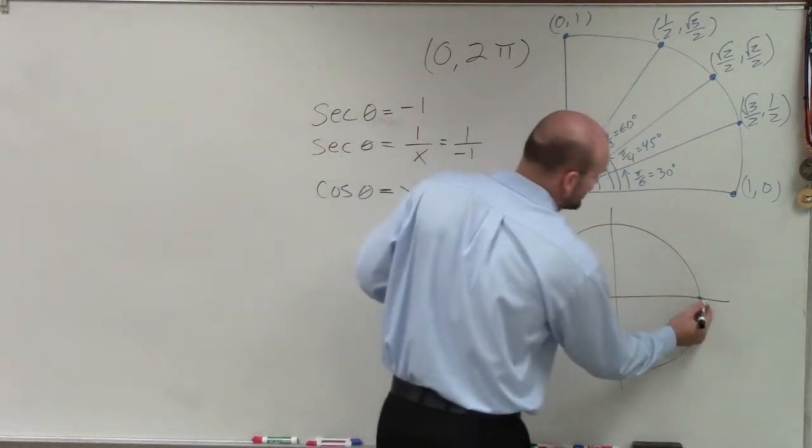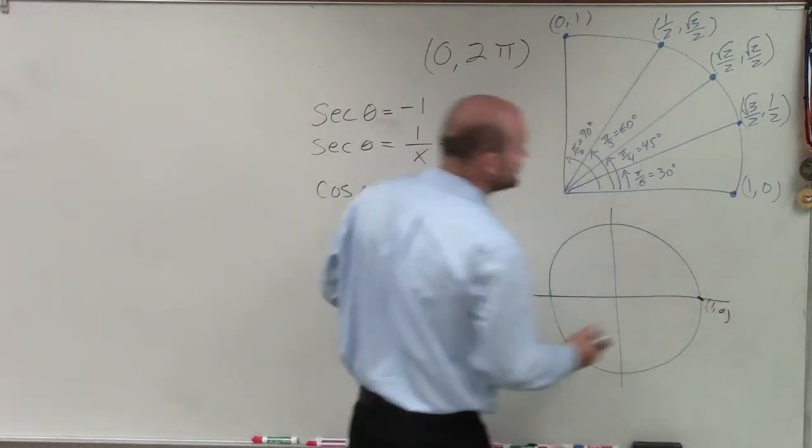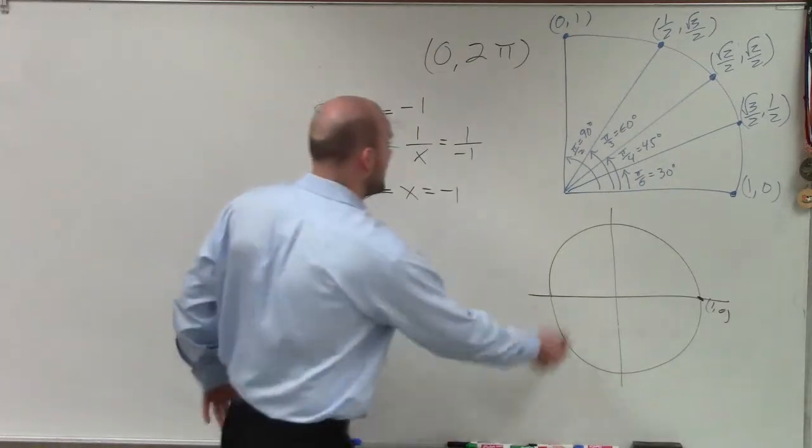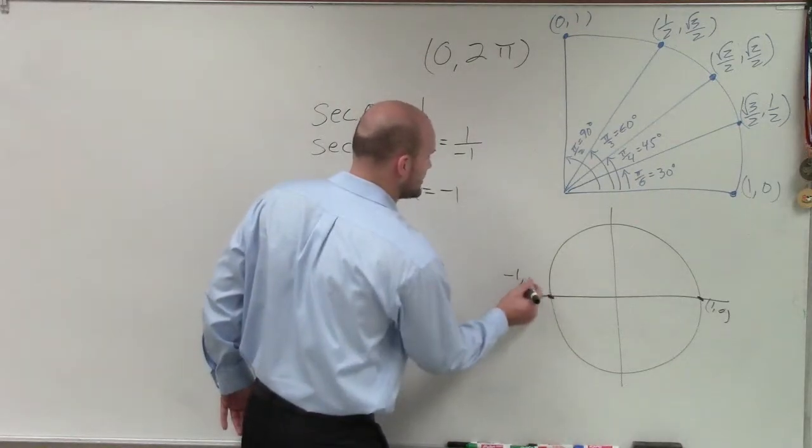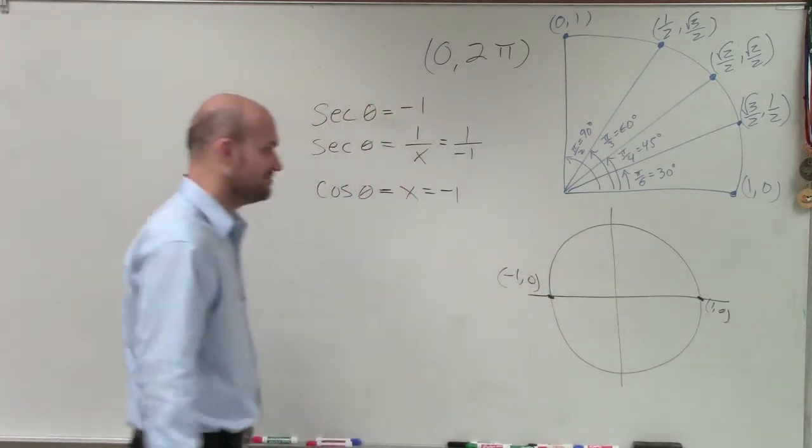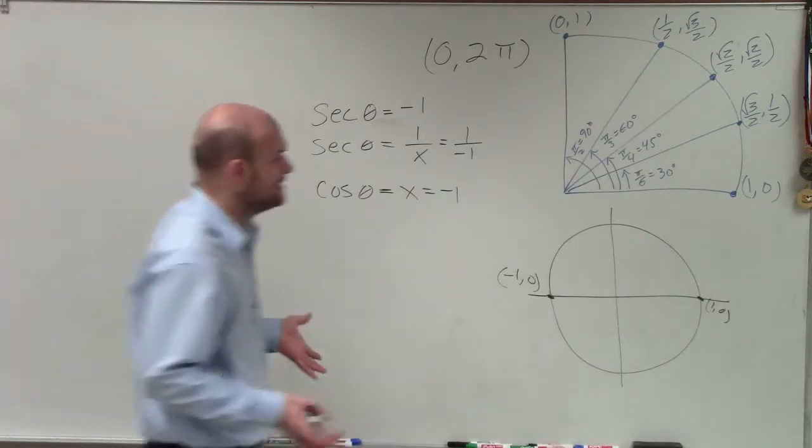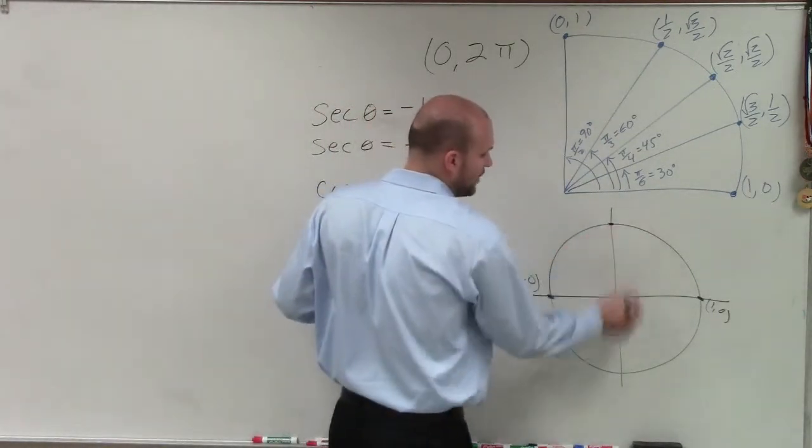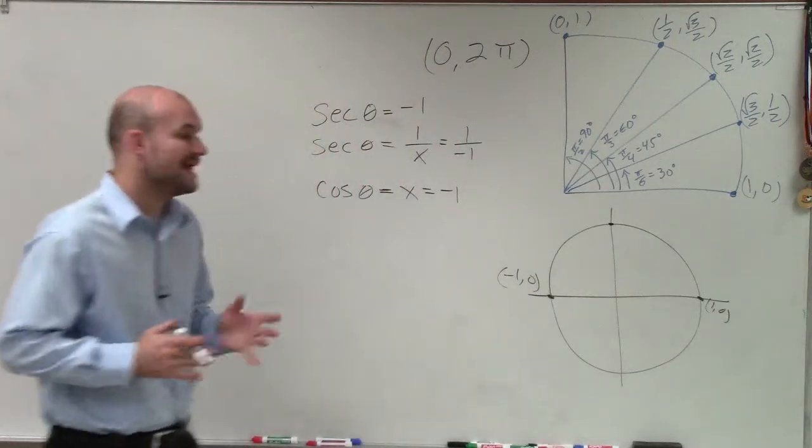Well, I know that this point is 1 comma 0. And since the unit circle has a radius of 1, I know that this point over here is also going to be negative 1 comma 0. And these other two coordinates are at 0, 1 and 0, negative 1.